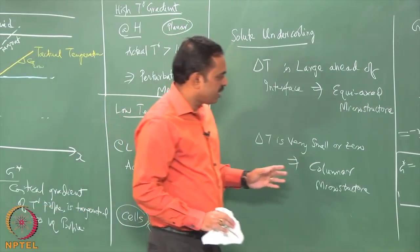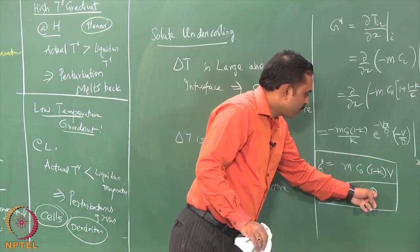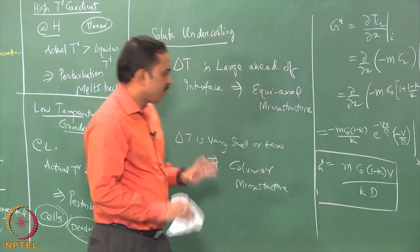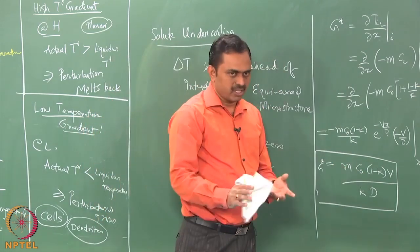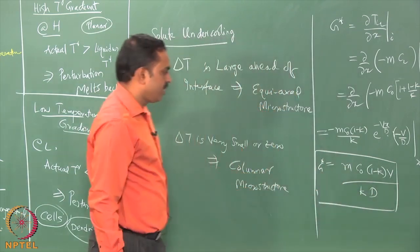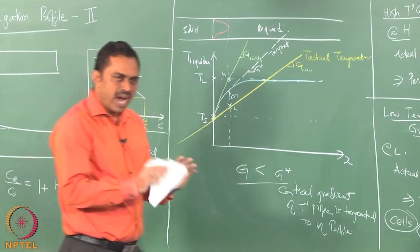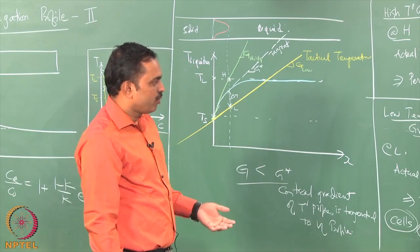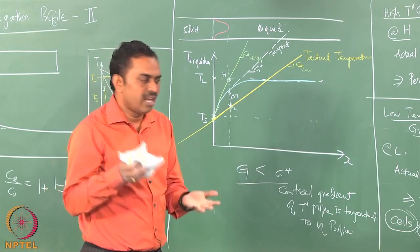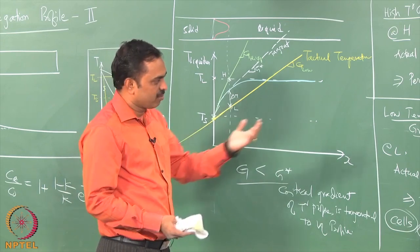Process conditions come via the interface velocity, which is related to the torch velocity. Parameters like D, k, and m are material properties coming from the phase diagram. C₀ can be chosen as a process parameter — the alloy composition. So this condition can be tuned. We can now ask in the assignment: given two alloys, which will have a higher tendency to form equiaxed microstructure?